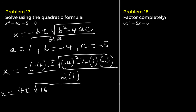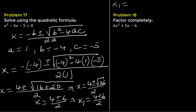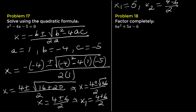We have 4 plus or minus the square root of 16 plus 20, all over 2, which gives 4 plus or minus the square root of 36, all over 2. The square root of 36 is 6, giving 4 plus or minus 6, all over 2. The first solution is 4 plus 6 over 2, which is 10 over 2, equal to 5. The second is 4 minus 6 over 2, equal to negative 2 over 2, which is negative 1.